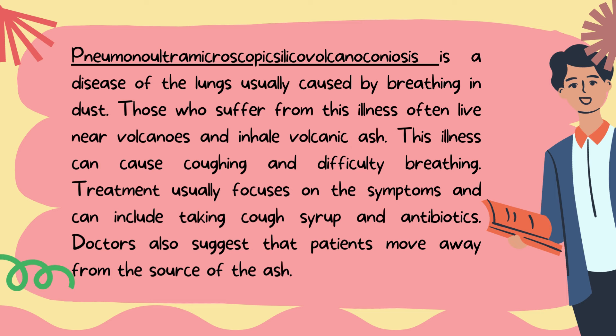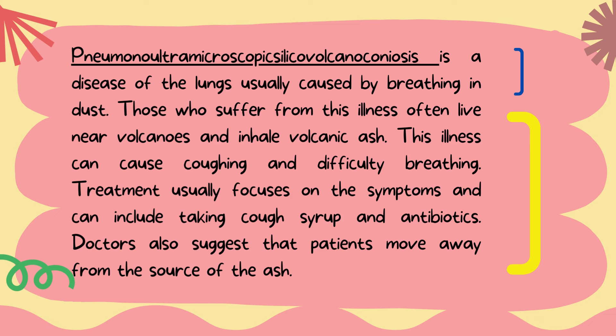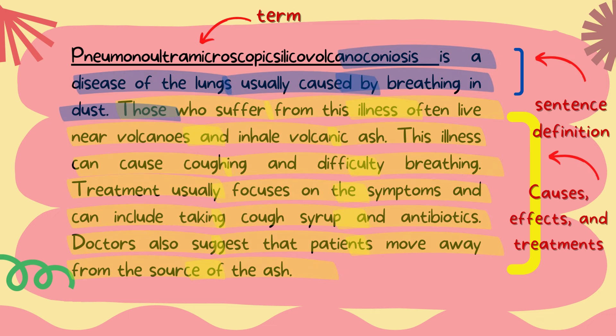Pneumonoultramicroscopic silicovolcanoconiosis is a disease of the lungs, usually caused by breathing in dust. Those who suffer from this illness often live near volcanoes and inhale volcanic ash. This illness can cause coughing and difficulty breathing. Treatment usually focuses on the symptoms and can include taking cough syrup and antibiotics. Doctors also suggest that patients move away from the source of the ash. Notice that the sample paragraph started with a sentence definition but then included an explanation of the causes, effects, and treatments of the disease.